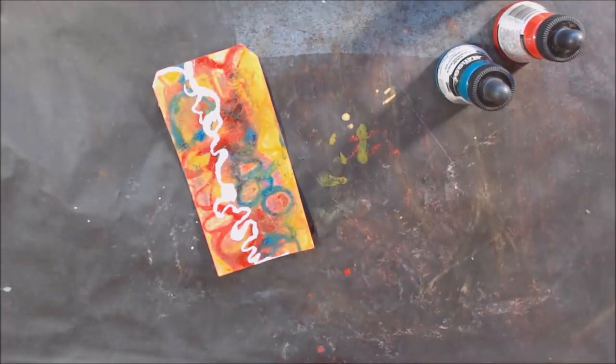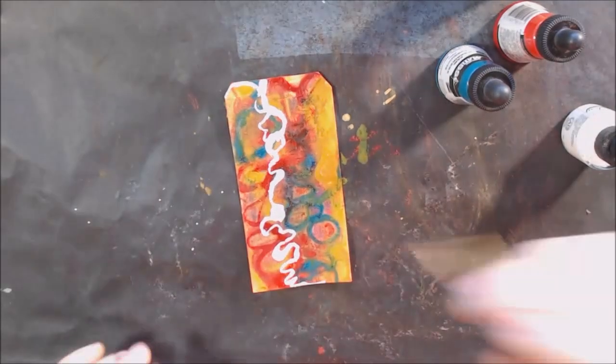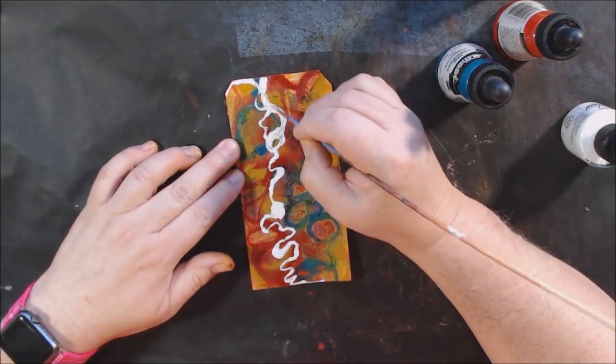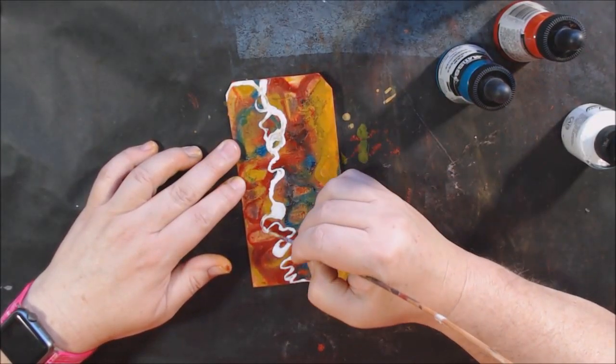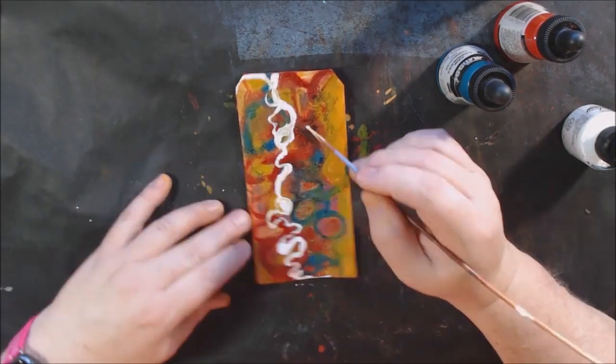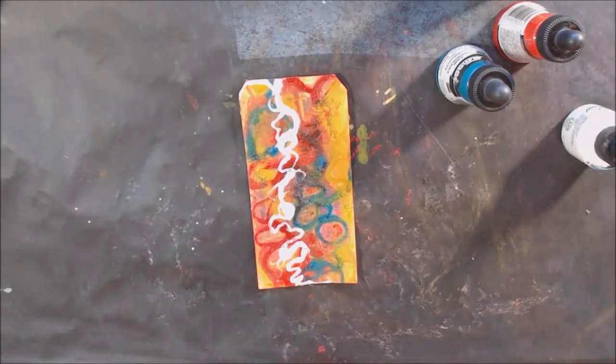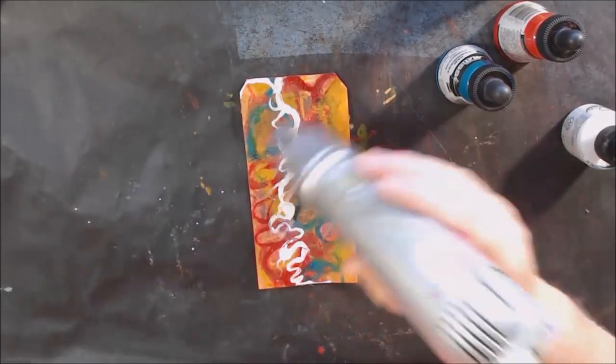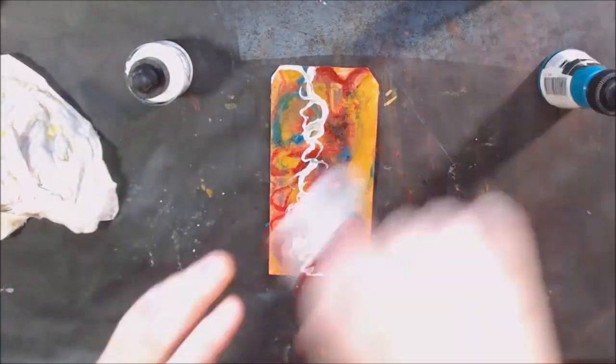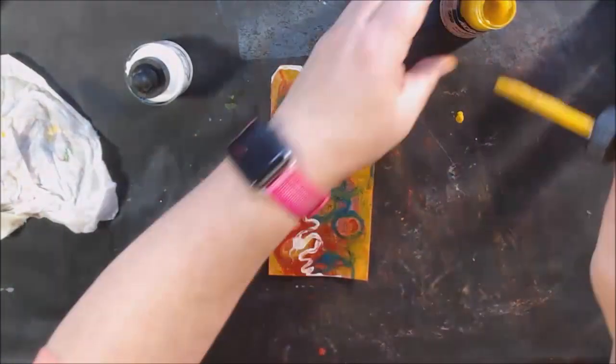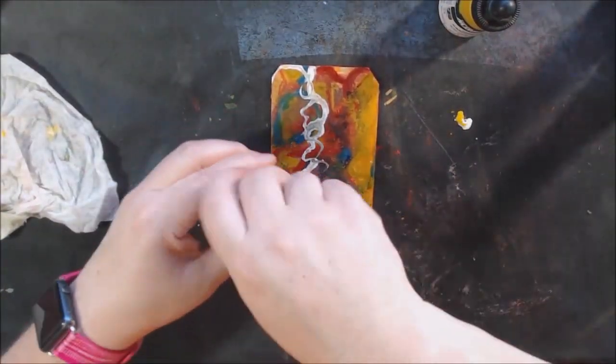I used my white India ink and I squiggled with it down the tag in a vertical way with the little dropper inside. Then I used my skewer and scraped through it and made it more interesting. I liked that but then now I needed to still lighten it up a little bit.